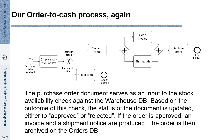Let's look at the description. The purchase order document serves as an input to the stock availability check against the warehouse database. Based on the outcome of this check, the status of the document is updated, either to approved or rejected. If the order is approved, an invoice and a shipment notice are produced. The order is then archived on the orders database.